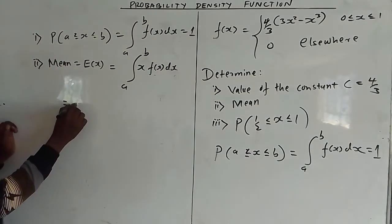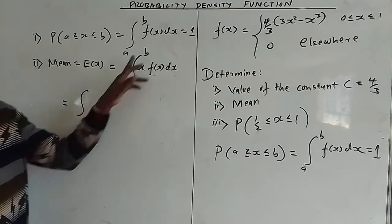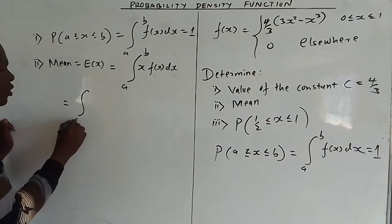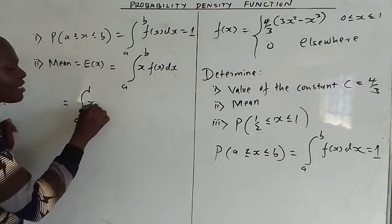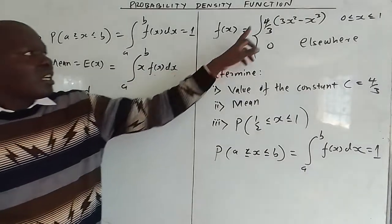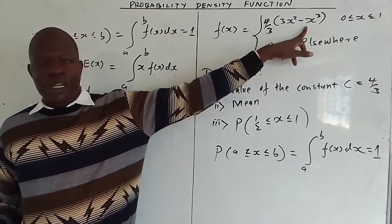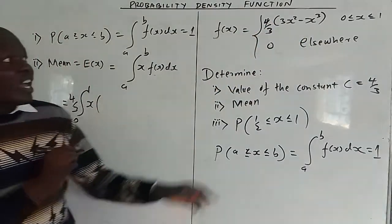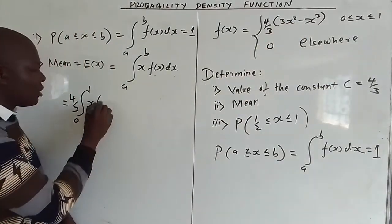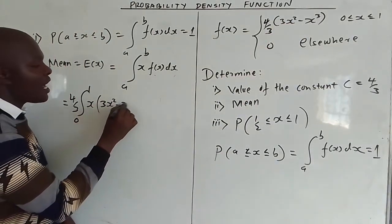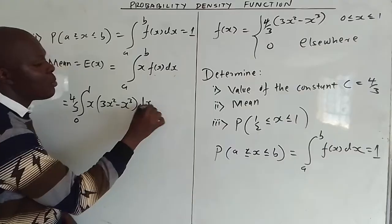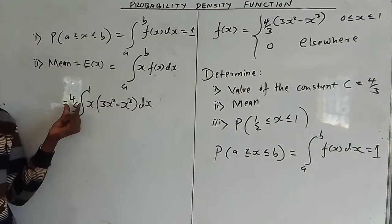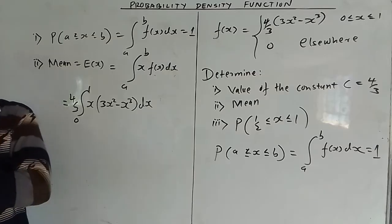Substituting, we integrate from 0 to 1, with x times f(x), where f(x) = (4/3)(3x² - x³). Since 4/3 is a constant, we factorize it outside the integral. Inside we have x times (3x² - x³), which simplifies to 3x³ - x⁴.